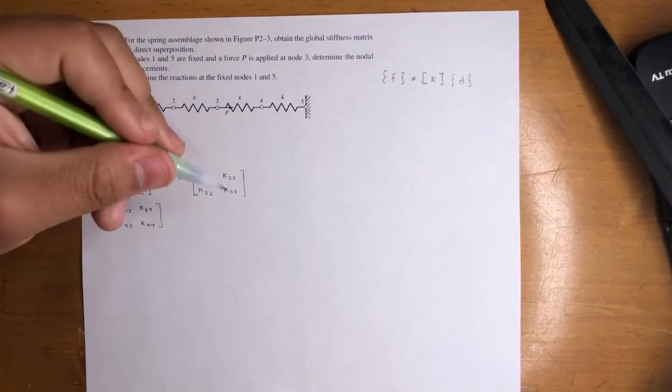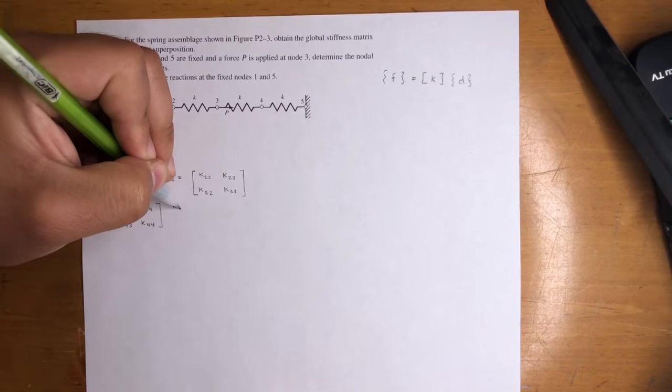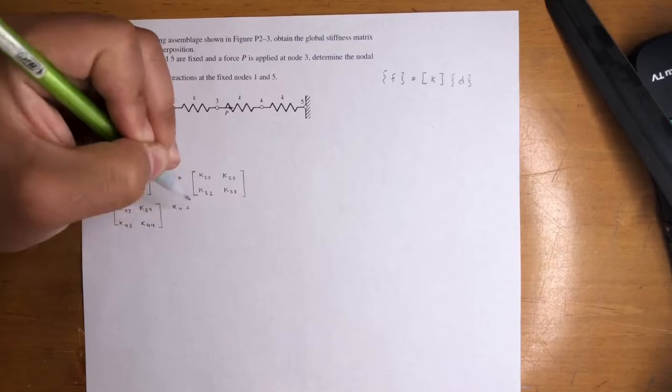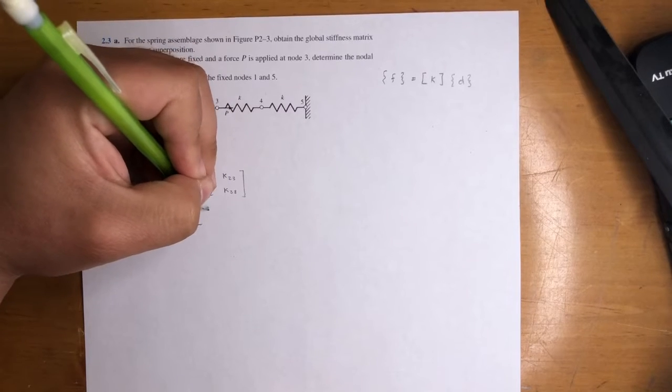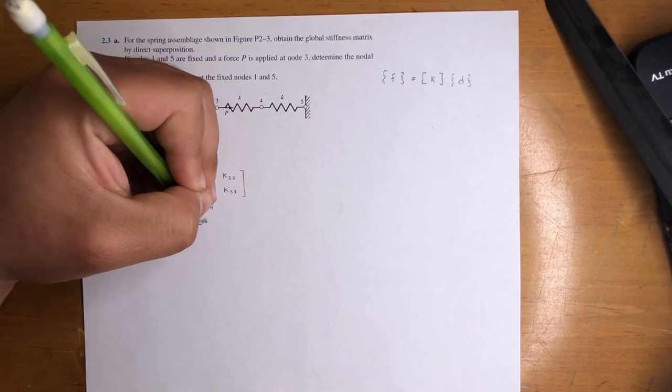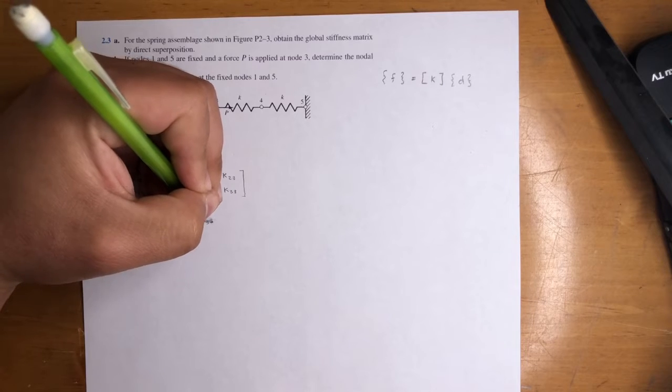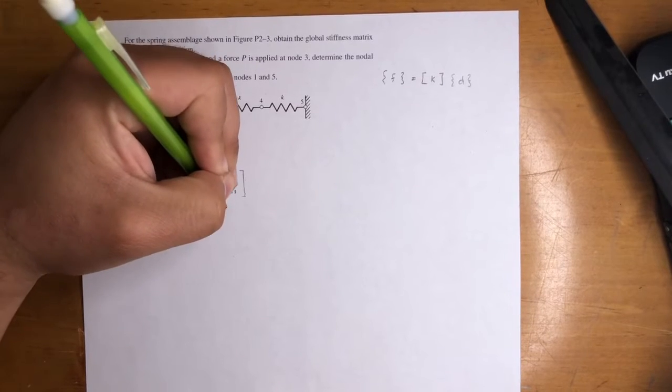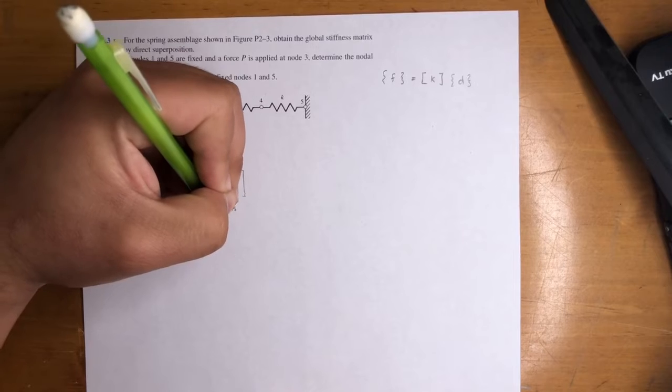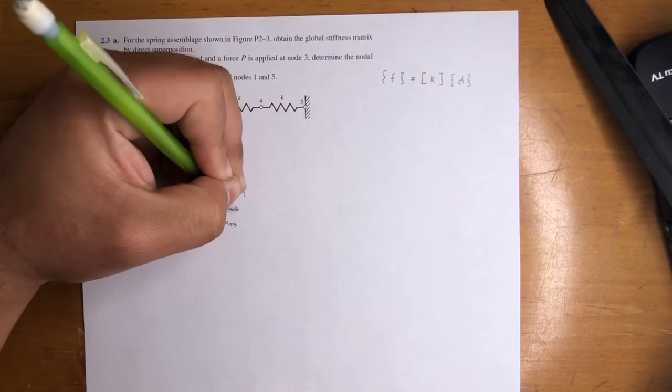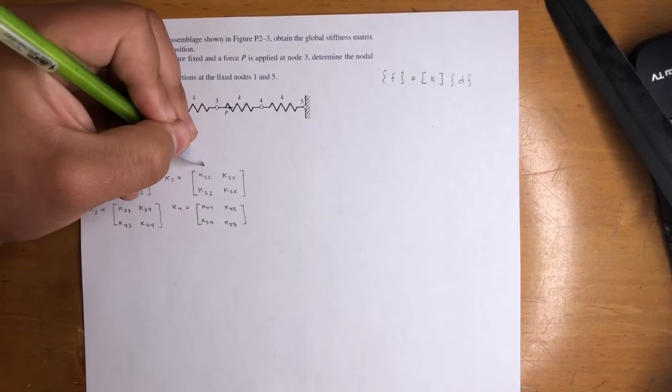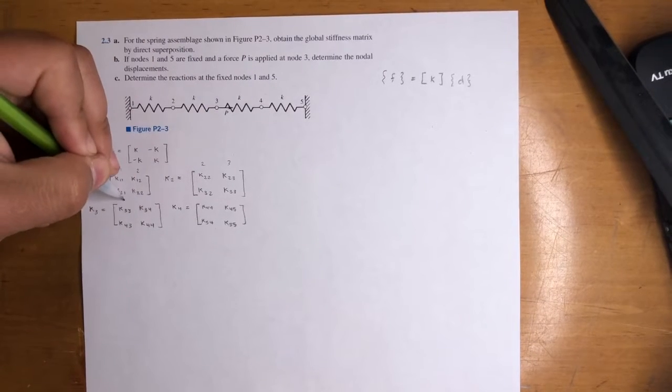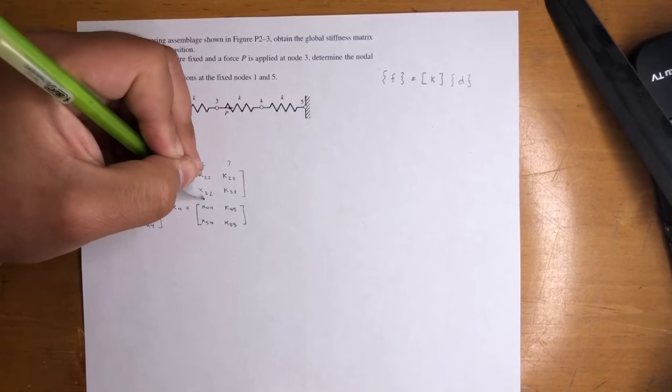Okay, then we got finally the last one, K4. It's going to be K, it's between 4 and 5. So K44, K54, right? 4, 5, yeah. K45, and then K55. Again, just do what I did here, but for each one, this is 2, 3, this is 3, 4, 4, 5.